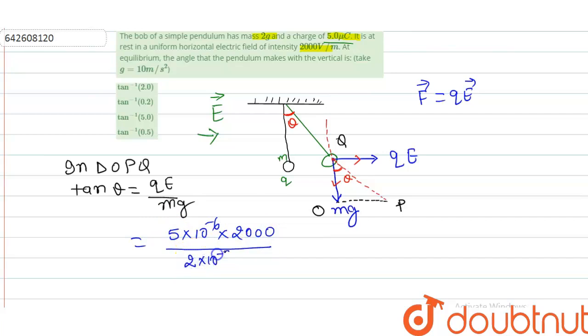...the value of electric field. Mass is what? 2 grams, so I will write 2×10^-3 into g, that is 10. On solving this, 10^-6, all 3s getting cancelled out, 10 by 10 is 1. This is 20, it becomes 10 divided by 20, that is 1 by 2. So what happens? Tan theta is 1 by 2, or 1 by 2 can be written as 0.5.